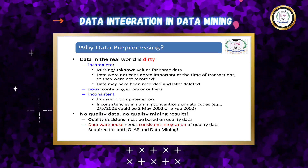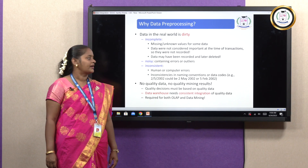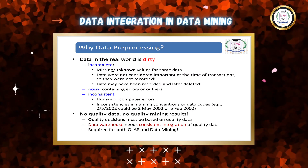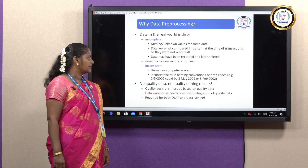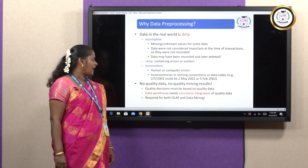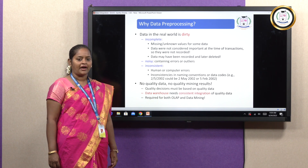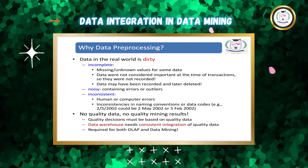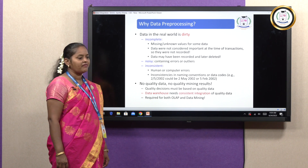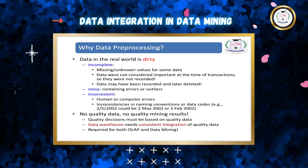Incomplete: missing or unknown values — data were not considered important at the time of transaction and were not recorded, or data may have been recorded and later deleted. Noisy: containing errors and outliers. Inconsistent: human or computer errors — for example, 2-5-2002 could be May 2, 2002 or February 5, 2002. No quality data means no quality mining results. Quality decisions must be based on quality data. Data warehouse needs consistent integration of quality data — required for both OLAP and data mining.